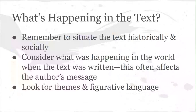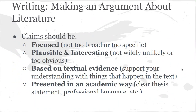So how do we figure out what's happening in a text? One way is to situate the text historically and socially — look at what was going on in the real world at the time when the text was written. What time period was this piece written in? What sorts of historical things were happening? Was there a war going on? Were there any social movements that were relevant? Those things often affect the author's message. We also want to look for things like themes and figurative language used in the text, and we'll talk more about those in your assignments surrounding whichever text you're reading.